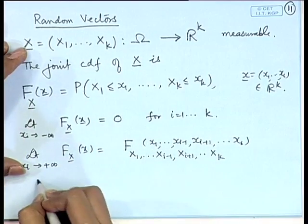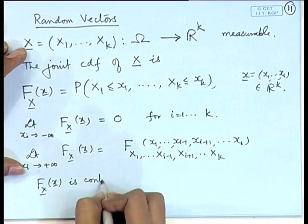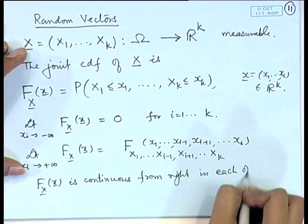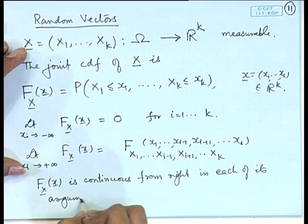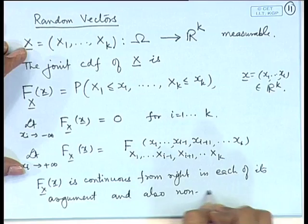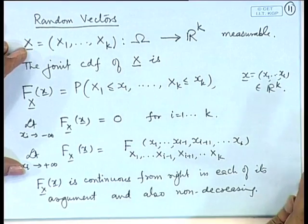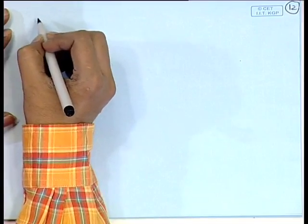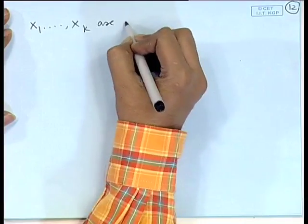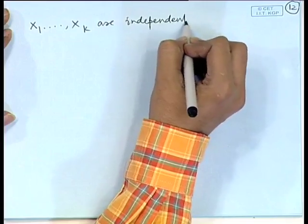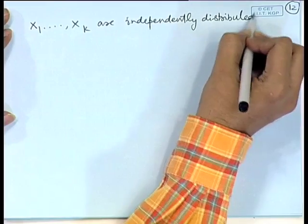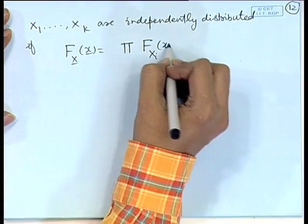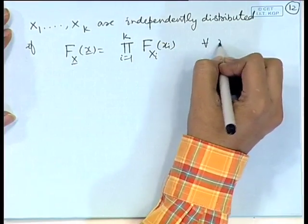The function F_X is continuous from the right in each of its arguments and also non-decreasing. Using this joint CDF, we can define the concept of independence: X_1, X_2, ..., X_k are independently distributed if the joint CDF can be written as the product of the individual CDFs for all x belonging to R^k.